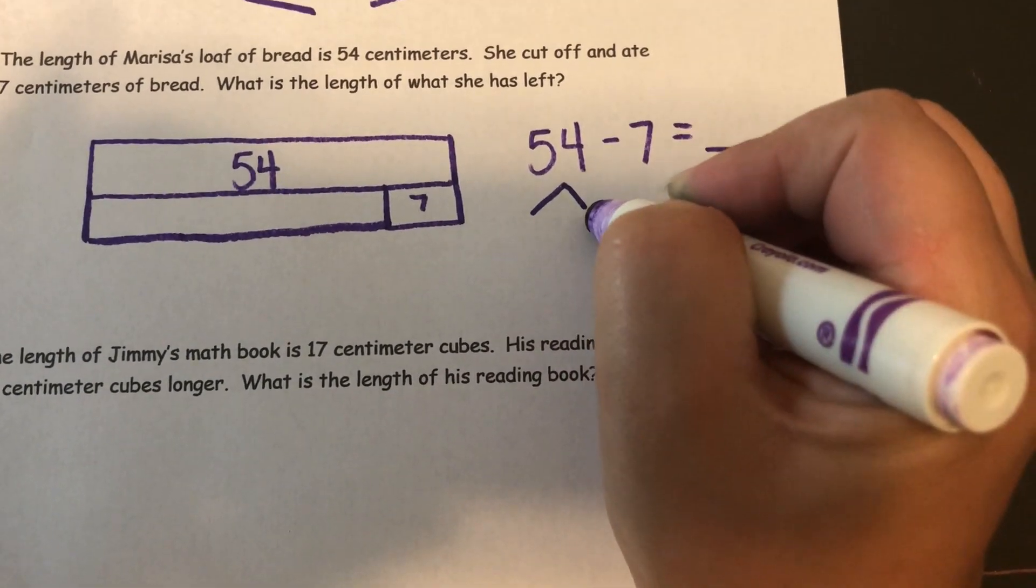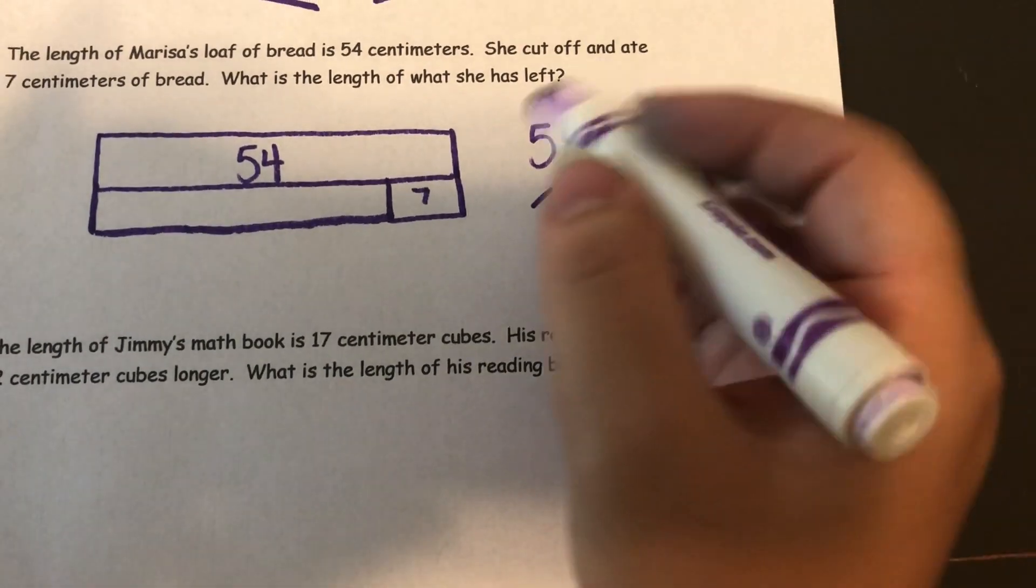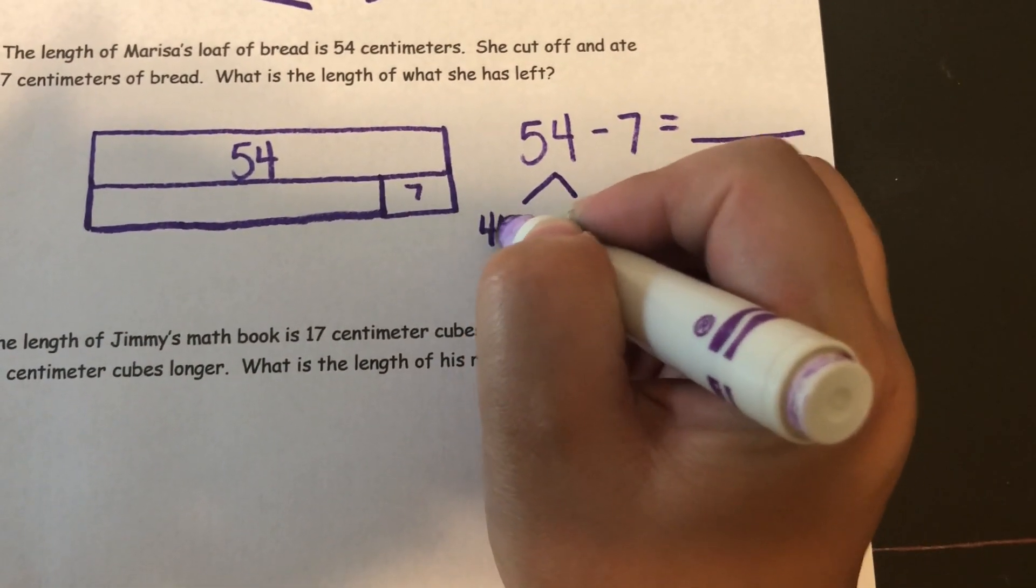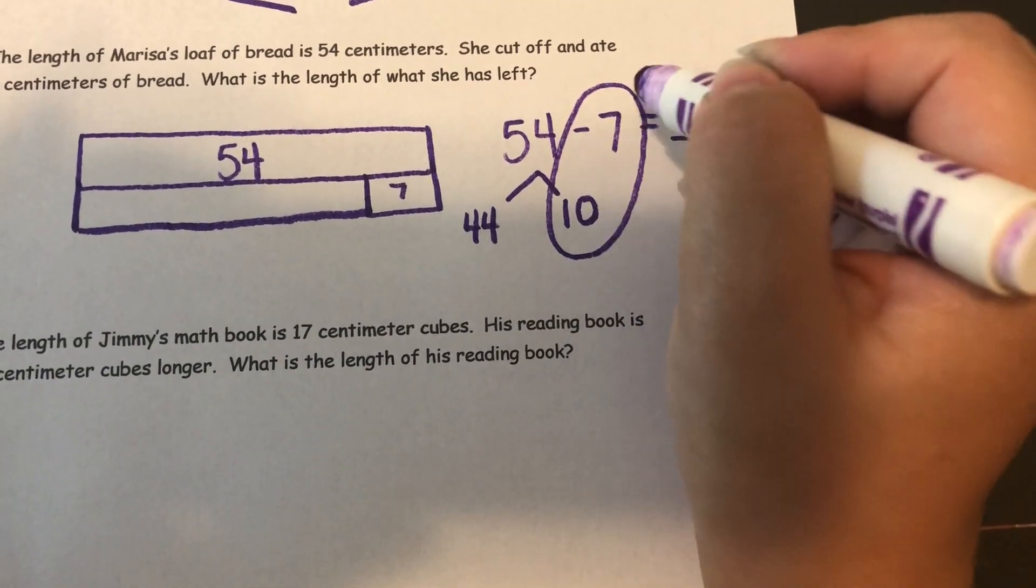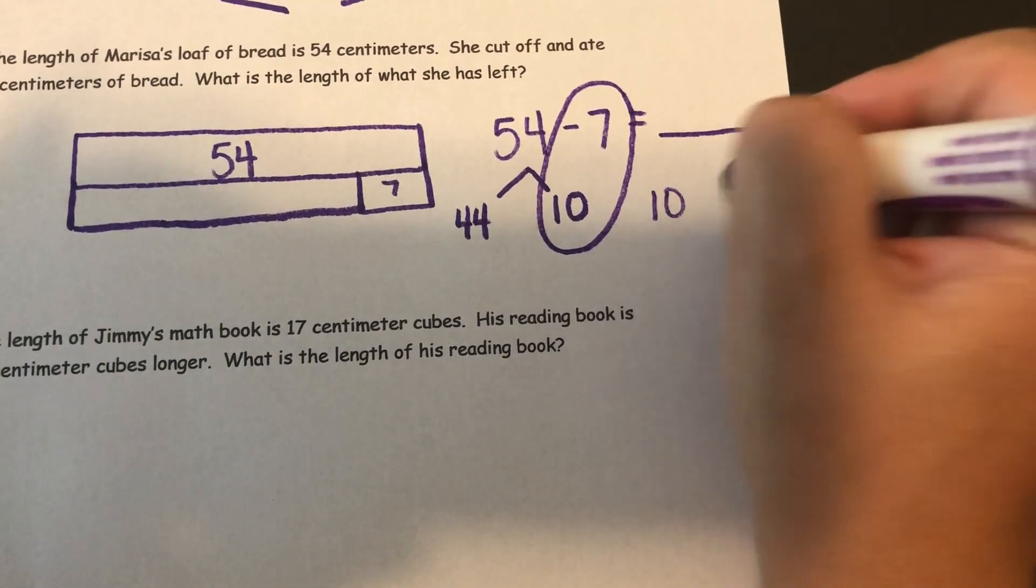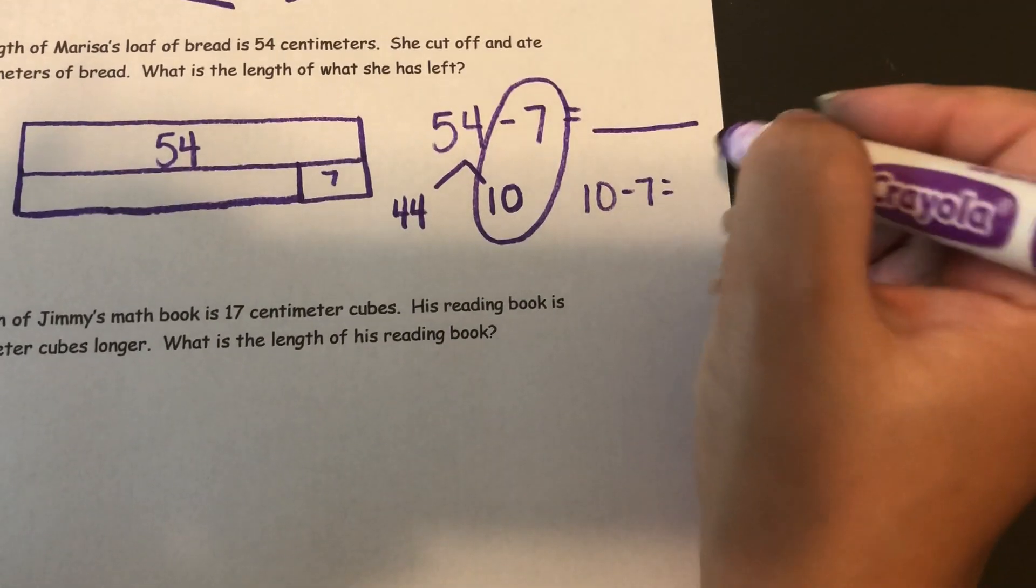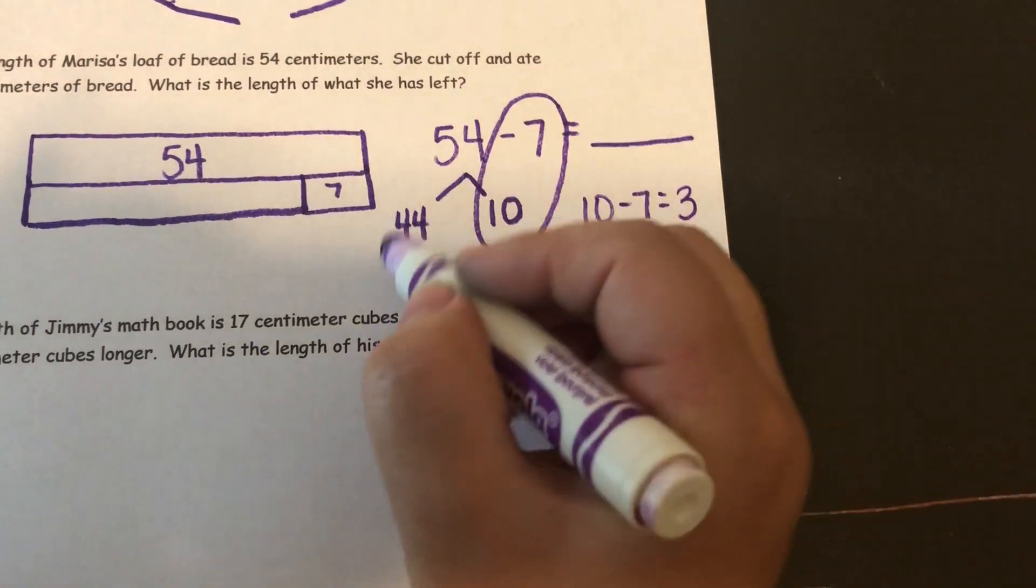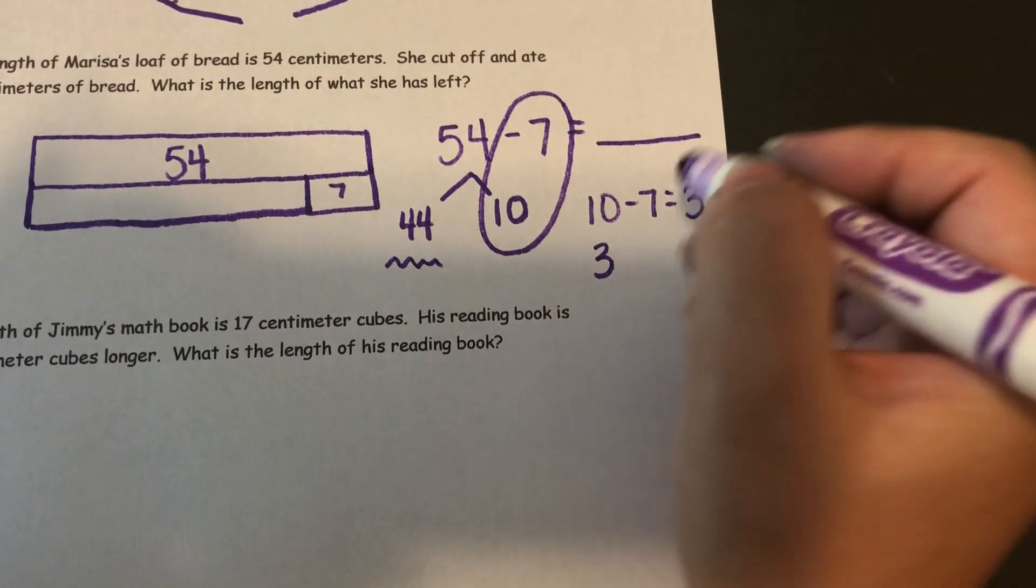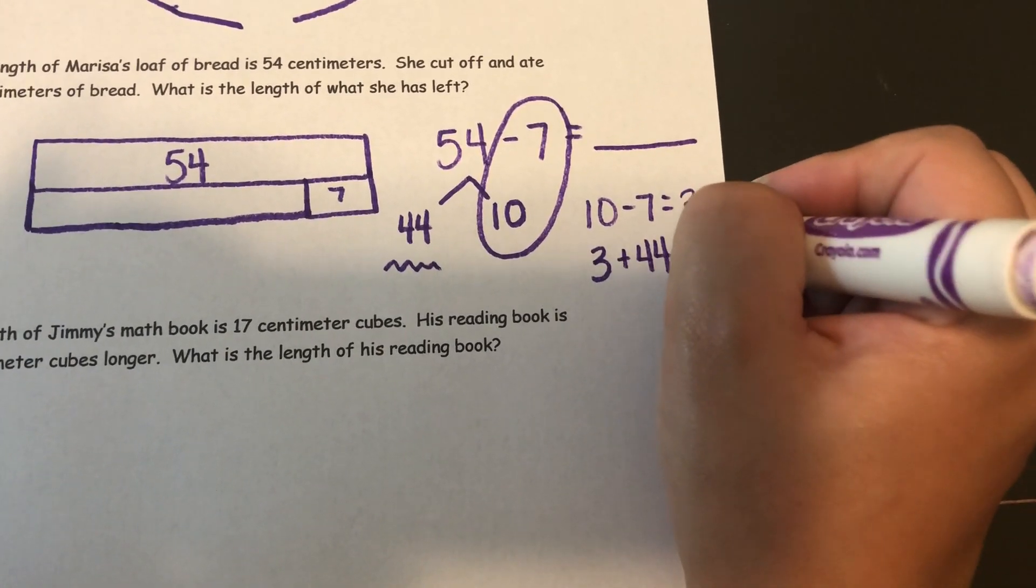I will take a 10 out of 54, which leaves me with 44. And now I can solve 10 minus 7. I know that 10 minus 7 is 3. And then I add in my leftover 44.